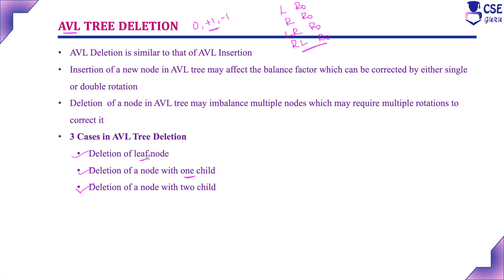Whenever you are deleting a leaf node, one child, or two children, if the tree becomes unbalanced, we need to check the tree first and apply whichever rotation is required to convert it into a balanced one.